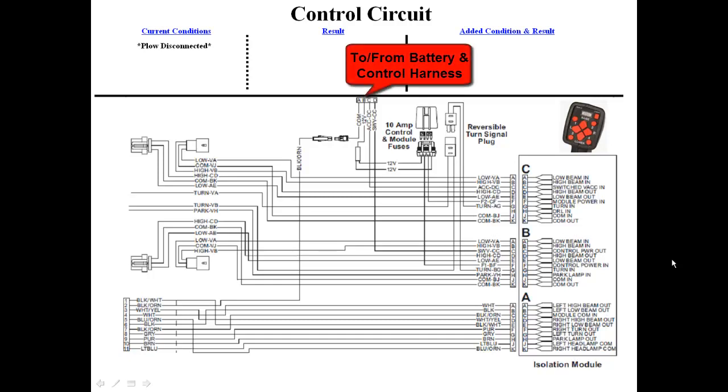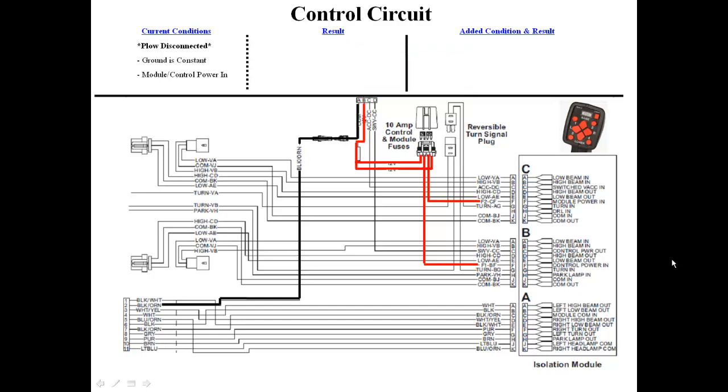The plow is currently disconnected. Ground from the battery runs out to the 11-pin lighting harness on the black-orange wire. 12 volts from the battery runs to the F1 and F2 fuses, which provides power to the control power-in and module power-in circuits of the isolation module. The plow lights are not plugged in, so the ground path is not complete to the isolation module.